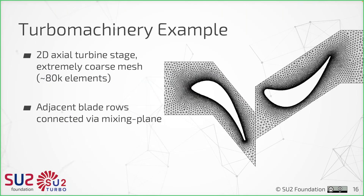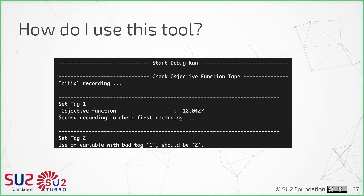For this example I'm using a 2D axial turbo stage on an extremely coarse mesh of about 80k elements — it's the axial stage 2D test case from the turbomachinery test case folder. These are two adjacent blade rows in plain view, and the design variable is an FFD box defined by nine design variables. Once compiled and run, we get an output showing the initial recording set to tag one, then the second recording set to tag two, with a mismatch where some variables have tag one but should be two.